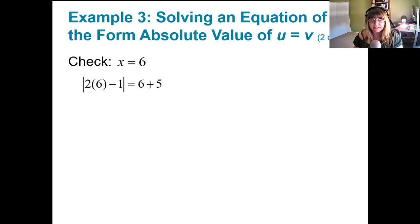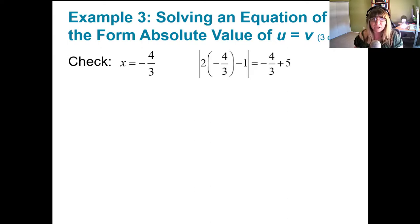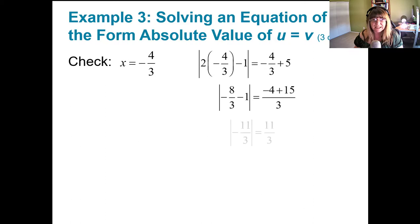Let's check both answers. Plugging in 6: 2 times 6 minus 1 is 11, and 6 plus 5 is 11 — check. For x equals negative 4 thirds: 2 times negative 4 thirds is negative 8 thirds; negative 8 thirds minus 3 thirds is negative 11 thirds; the absolute value of negative 11 thirds is 11 thirds. And negative 4 thirds plus 5 is 15 thirds minus 4 thirds, which is 11 thirds — check. Both answers are valid.